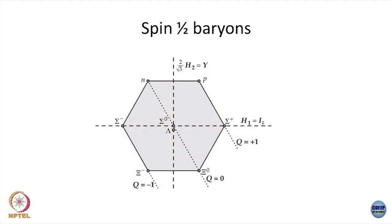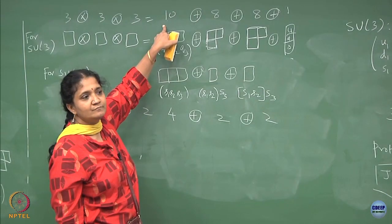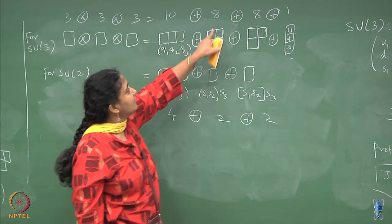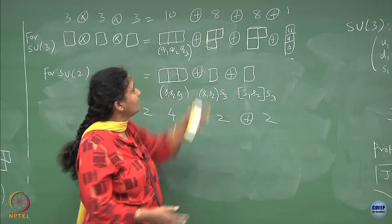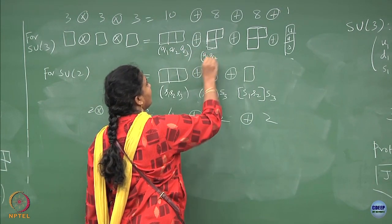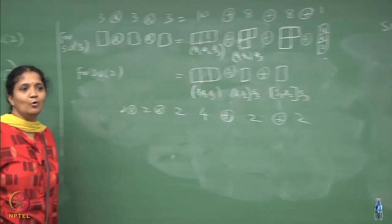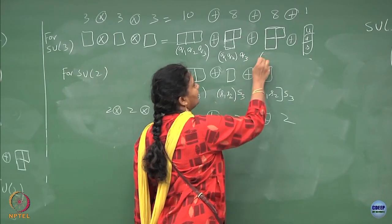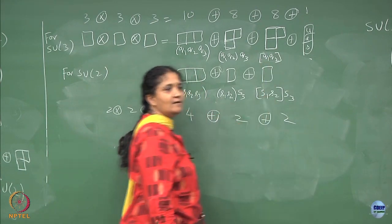Similarly, the spin-1/2 baryons also have a different irrep - this irrep has 8 particles, that is your 8-dimensional representation. The spin-1/2 baryons, which include protons and neutrons, belong to a different irrep from the decuplet. The decuplet irrep was totally symmetric; this spin-1/2 irrep is partially symmetric. You can write this as q1, q2 symmetric and q3 has no fixed symmetry, and here q1, q2 is anti-symmetric - anti-symmetric denoted by a square box.